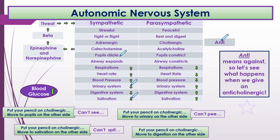Put your pencil on cholinergic and move to digestion on the other side — the digestive system goes down. So they can't see, they can't pee, they can't spit, and they can't... digest normally.